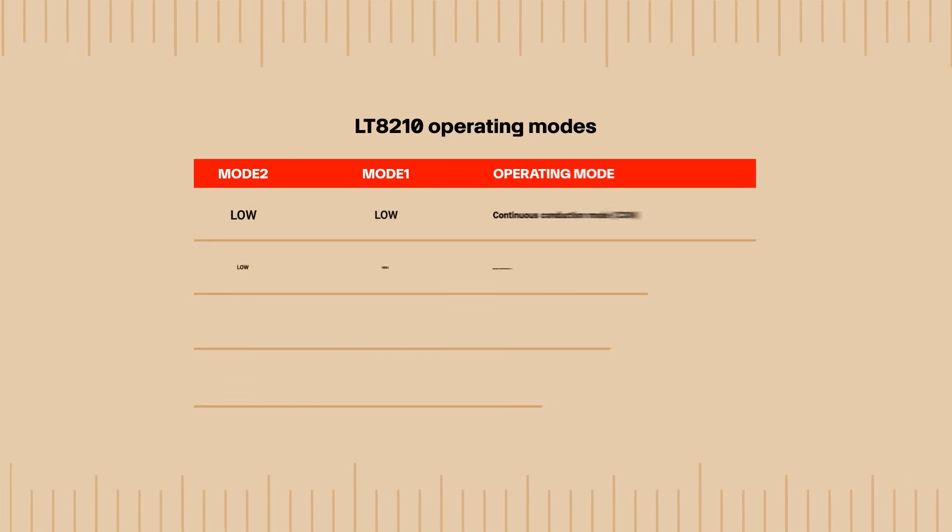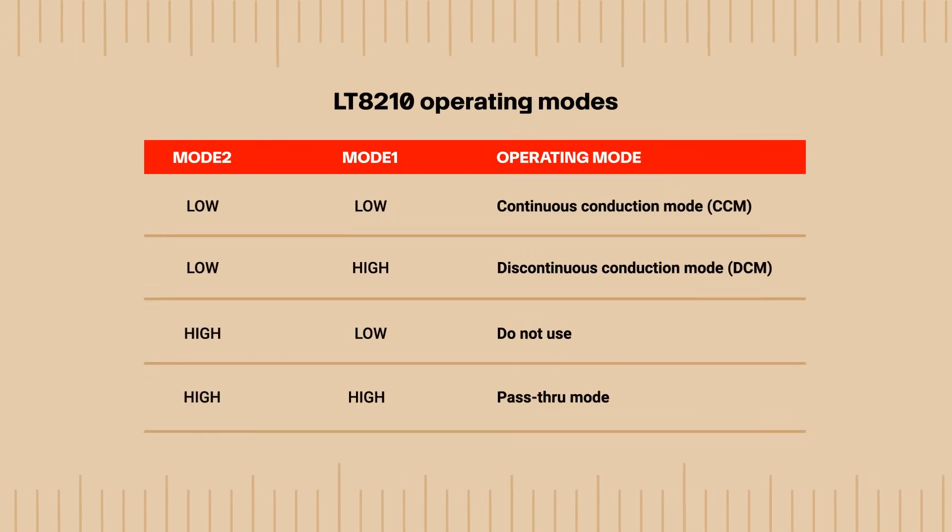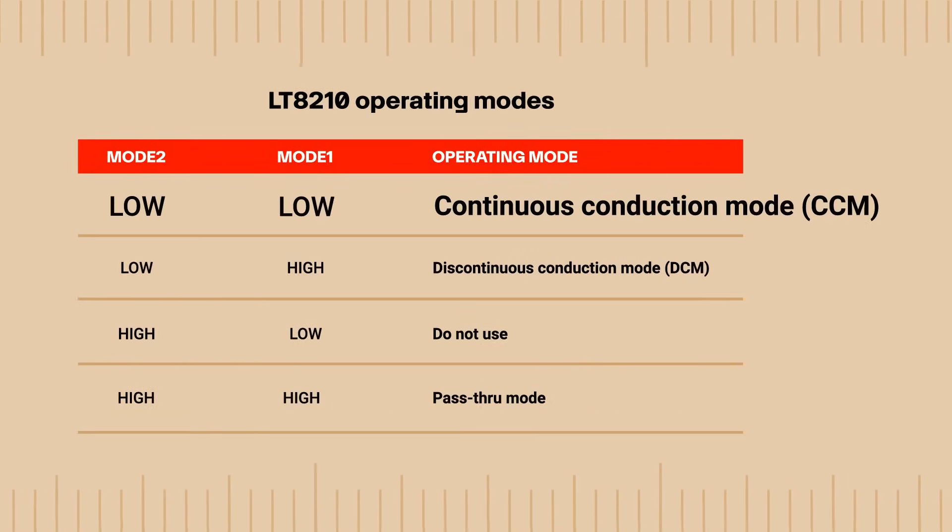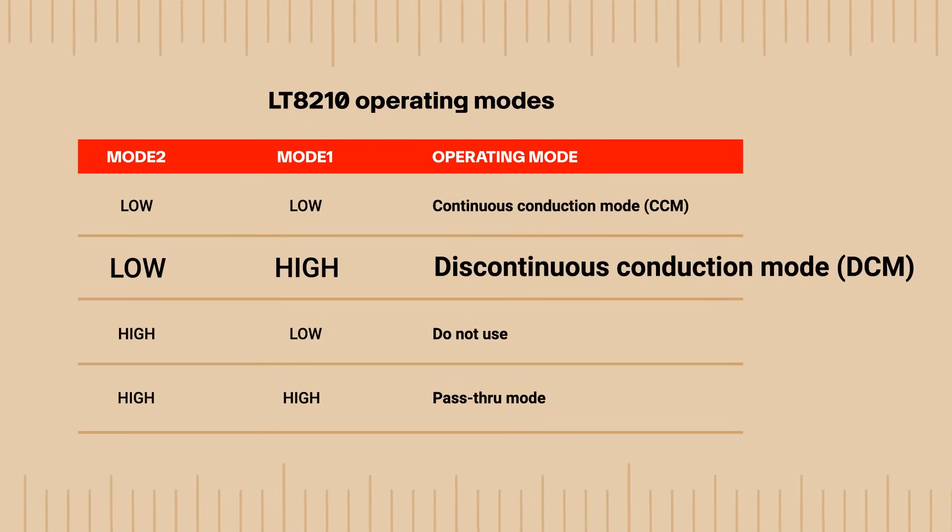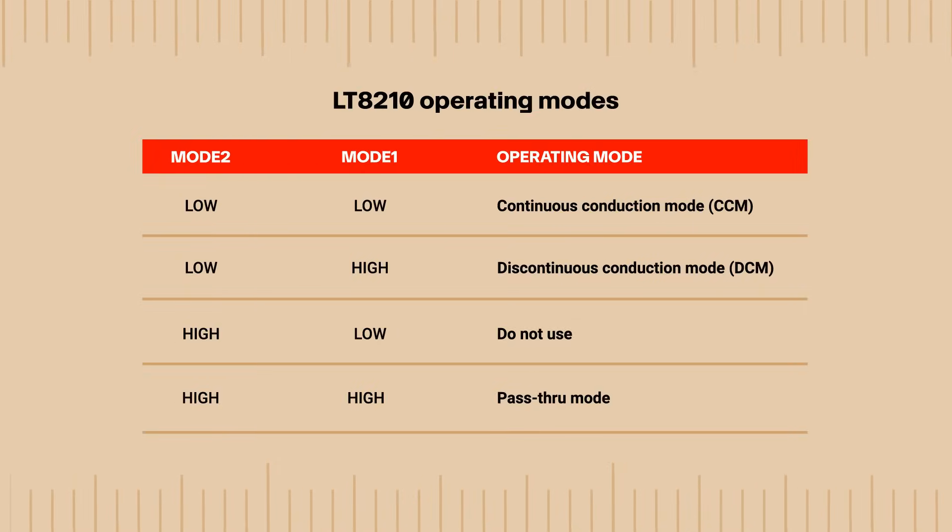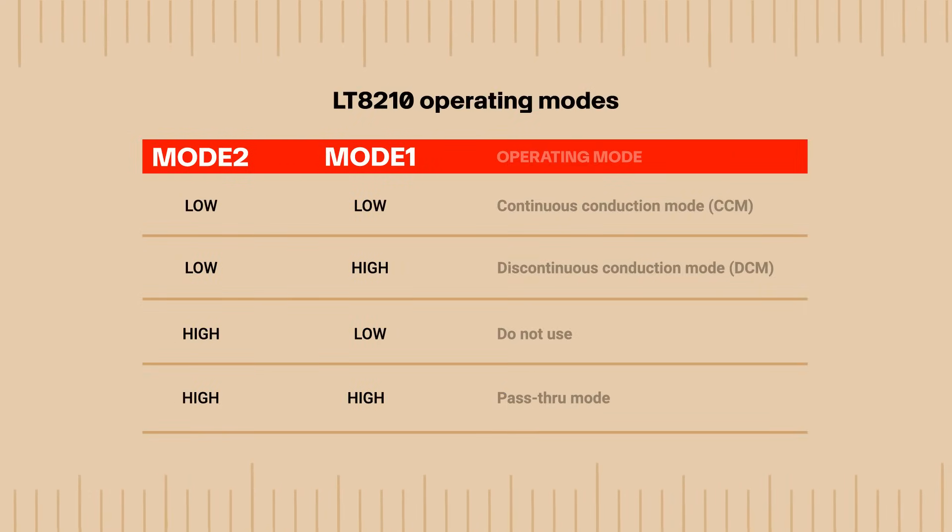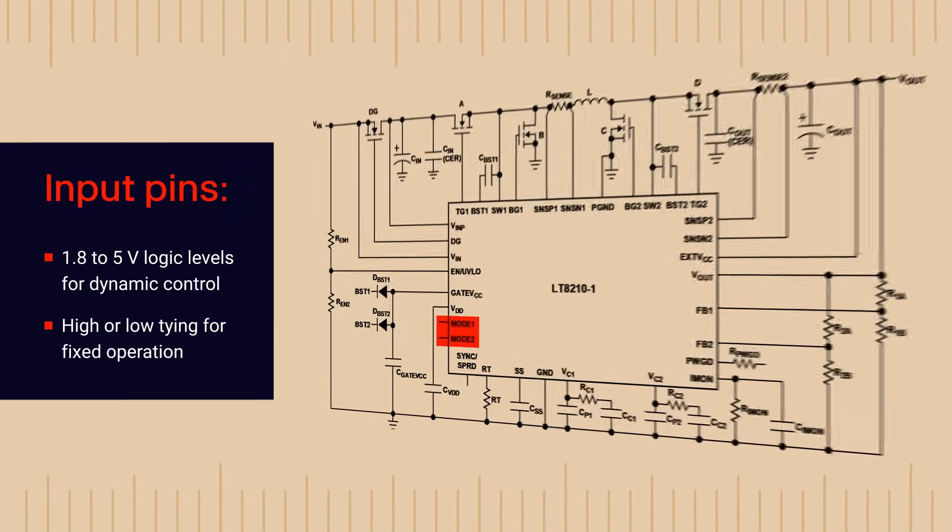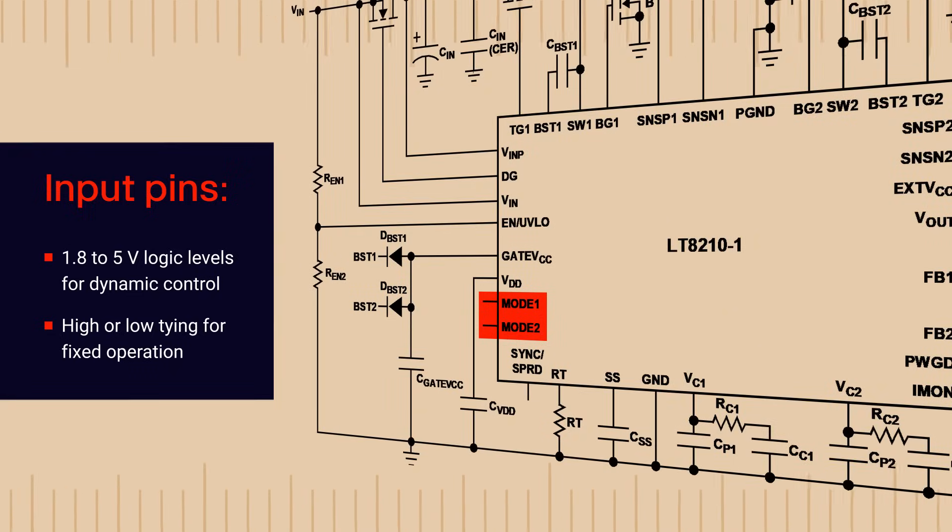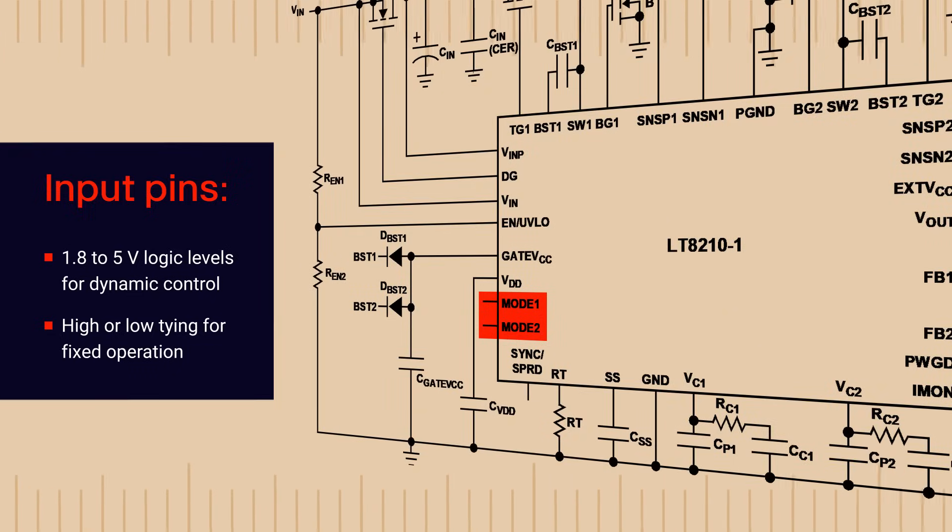The controller can operate in one of three modes: pass-through mode, forced continuous conduction mode, and pulse skipping or discontinuous conduction mode. These are selected via two mode input pins which can be driven with 1.8 to 5 volt logic levels for dynamic control or they can be tied high or low for fixed operation.